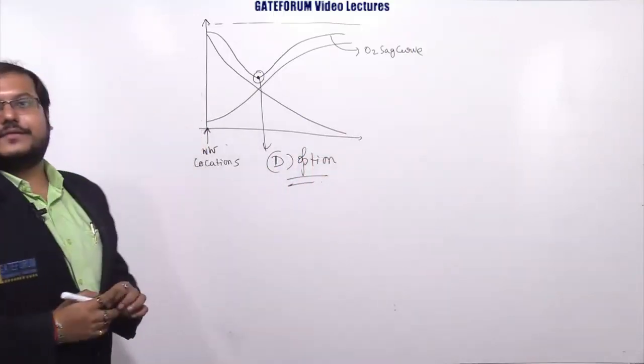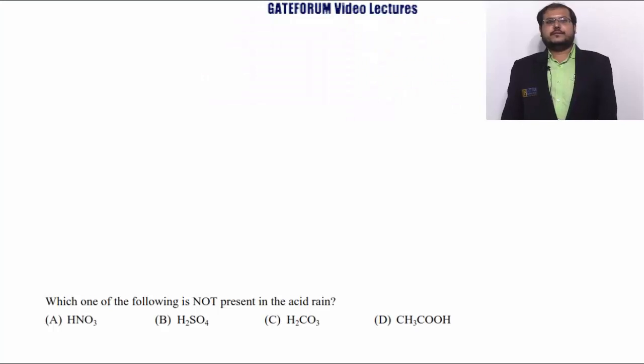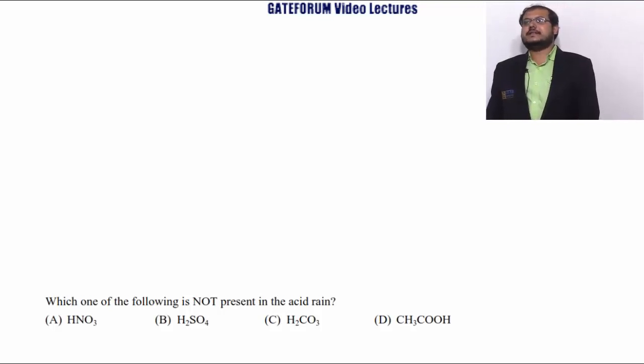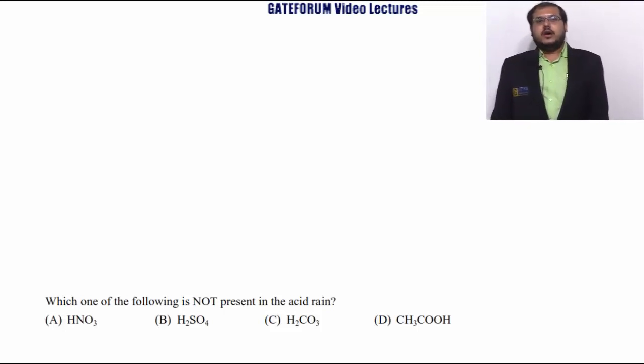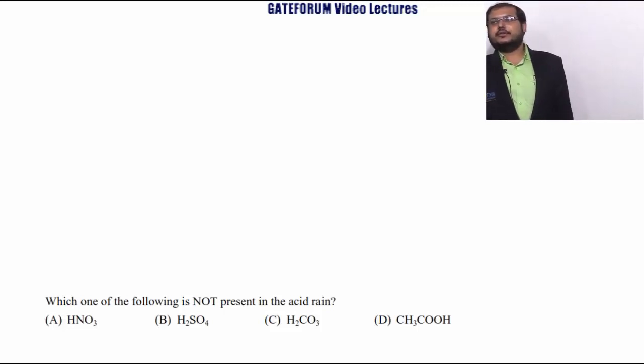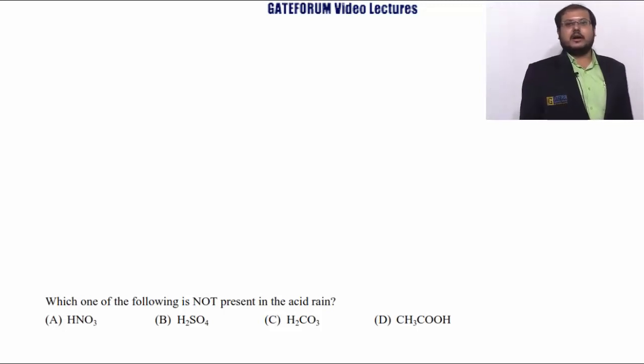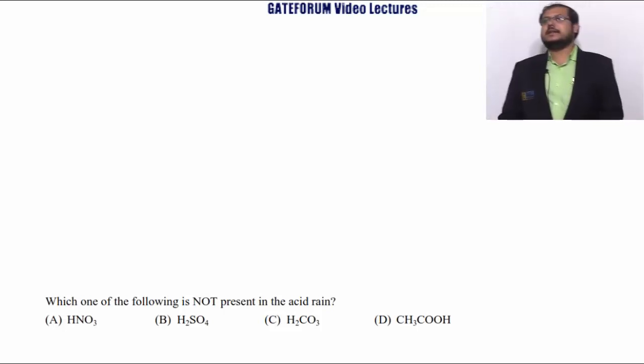Which one of the following is not present in acid rain? HNO3, H2SO4, H2CO3, and CH3COOH. Options A, B, and C - HNO3, H2SO4, and H2CO3 - all are aqueous part of the oxides of nitrogen, sulfur, and carbon. They are all present in acid rain. Option D, methyl alcohol CH3COOH is not present in acid rain. Option D will be the correct answer.